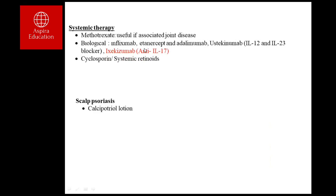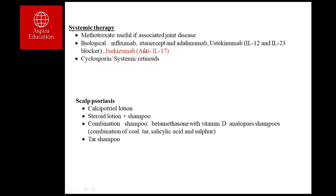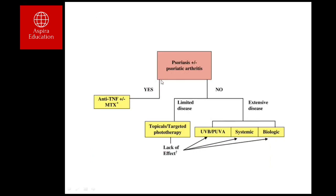Other drugs include cyclosporine and systemic steroids. For mild disease, topical therapy is used; for extensive disease, systemic therapy is needed. For scalp psoriasis, calcipotriol, steroid shampoo, or a steroid-vitamin D analogue combination can be used. Psoriasis with arthritis goes directly to systemic therapy such as methotrexate or a biological drug. Extensive disease without arthritis is treated with PUVA, methotrexate, or biological therapy.